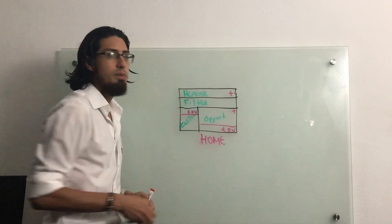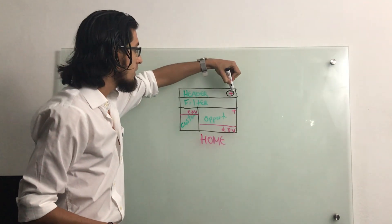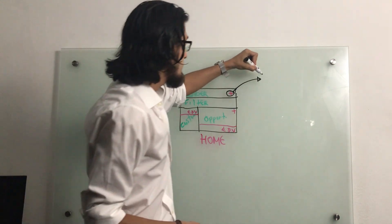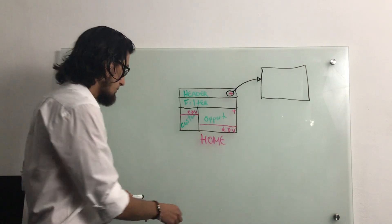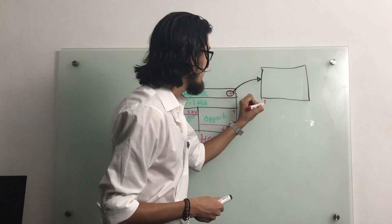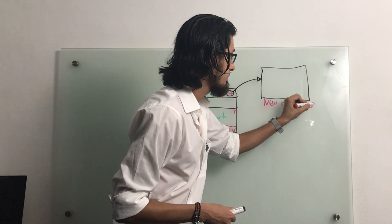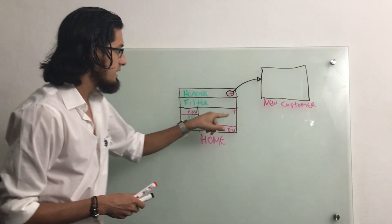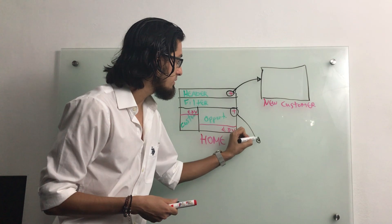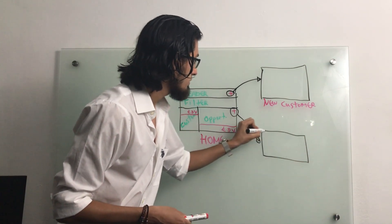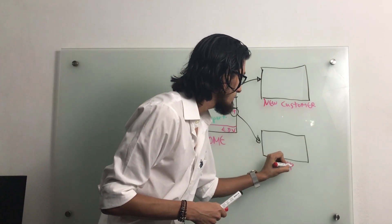So let's start with this particular action. If we click on this add customer button, we are going to launch another screen — this is going to be the new customer screen. Now if we click on the add opportunity button, we will also launch another screen. This is going to be the new opportunities screen.